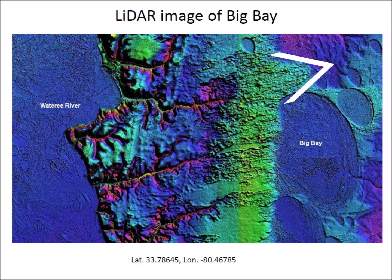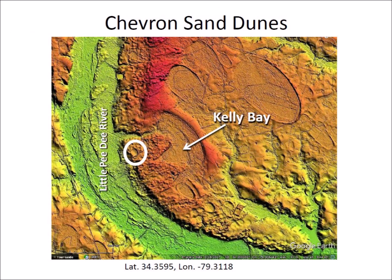Chevron sand dunes deposited at the margins of a body of water are typical evidence of a tsunami. This image shows Kelly Bay in South Carolina with sandy incursions. Like the example of Big Bay, the upper chevron on Kelly Bay has the crater of a small impact. This geological formation suggests that after Kelly Bay formed, a tsunami from an impact on the Little Pee Dee River deposited two chevron dunes and subsequently a small ice boulder produced a crater on the chevron marked with a circle.